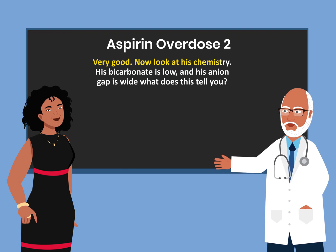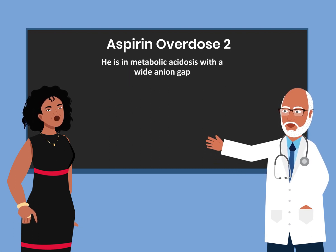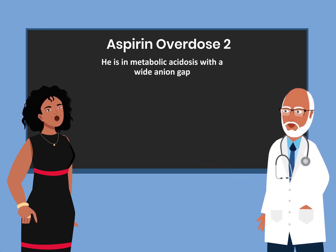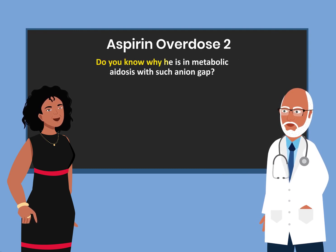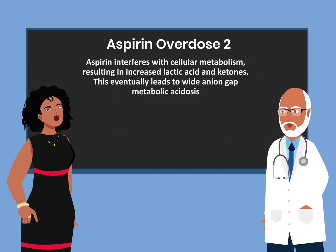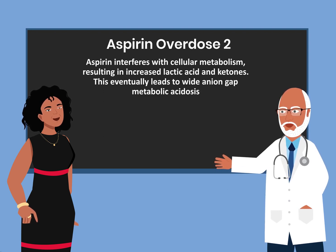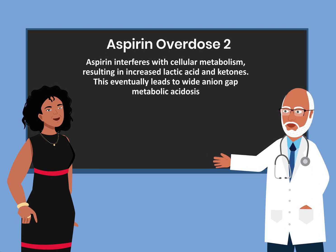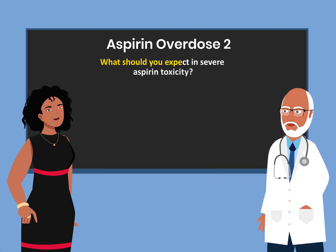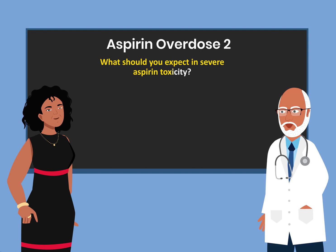Looking at his chemistry, his bicarbonate is low and his anion gap is wide — he is in metabolic acidosis with a wide anion gap. Aspirin interferes with cellular metabolism, resulting in increased lactic acid and ketones, which eventually leads to wide anion gap metabolic acidosis.